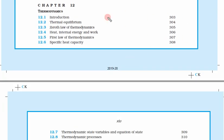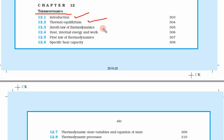Chapter 12 is thermodynamics. Previously we have seen heat transfer happening — things were cooling or heating — but why are they doing so? Those fundamental reasons we will learn in Chapter 12. First, introduction to thermodynamics, what is thermodynamics, what is thermal equilibrium — which means a balance condition.